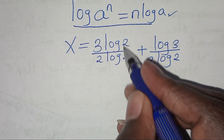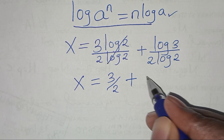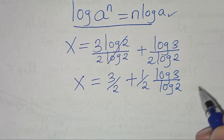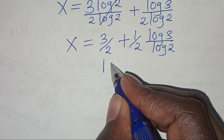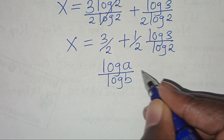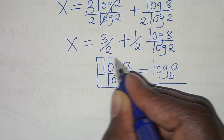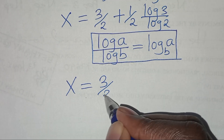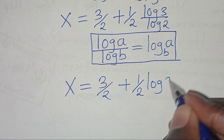Now let's simplify: the log 2 in the numerator and denominator of the first term cancel, so we have x equal to 3 over 2, plus one half times log 3 over log 2. Now, log 3 divided by log 2 is in the form of log a divided by log b, which we can express as log a to base b. Applying this change-of-base property, x is equal to 3 over 2 plus one half times log₂3.